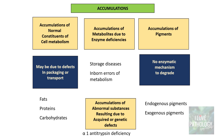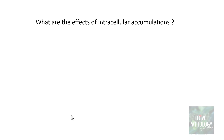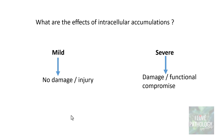In earlier videos I discussed accumulations of fat, fatty liver, and pigment accumulation in detail. In this video let's focus on accumulation of proteins and carbohydrates. The effects of accumulation depend on whether it is mild or severe. Mild accumulation does no harm — no damage or injury. If the accumulation is very severe, it results in damage and functional compromise.